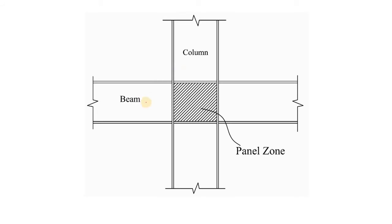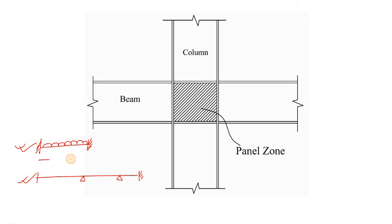This is a general arrangement for a beam-column junction with a moment connection. When this moment connection is used — for example if the beam is fixed-ended, built-up, or continuous — and a load is applied, there is some moment at the support. The bending moment diagram looks like this. In this beam, the moment may be clockwise or anti-clockwise; let's say it is clockwise.